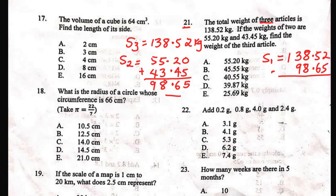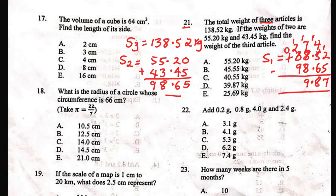Sum of 3 is 138.52 minus 98.65. 2 minus 5 is not possible, so borrow 1 from 5; 5 reduces to 4. 12 minus 5 is 7. Borrow 1 from 8; 8 reduces to 7. 14 minus 6 is 8. Borrow 1 from 3; 3 reduces to 2. 17 minus 8 is 9. 12 minus 9 is 3. So the answer is 39.87 kilograms.